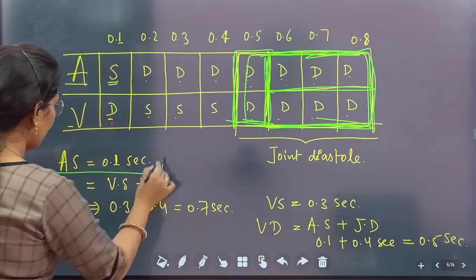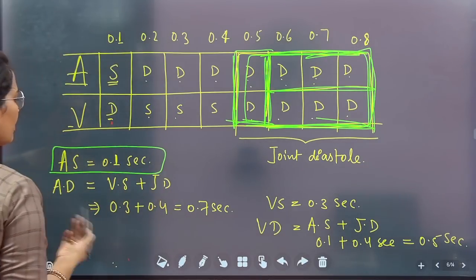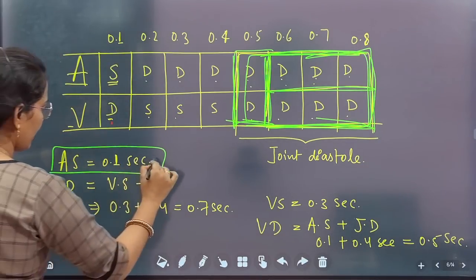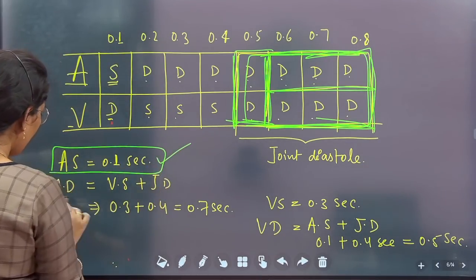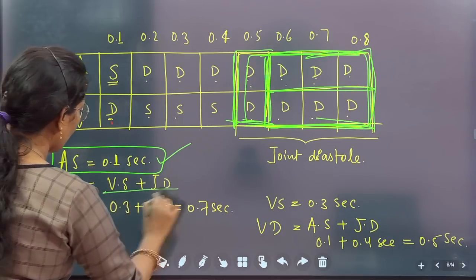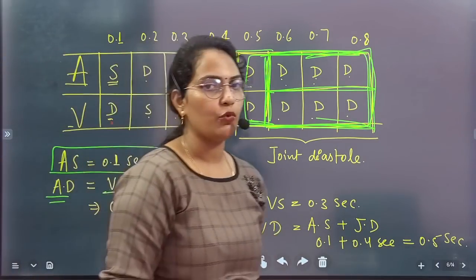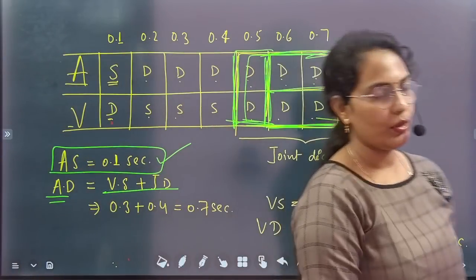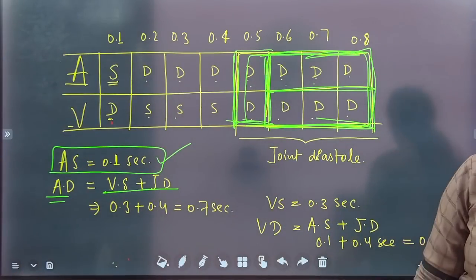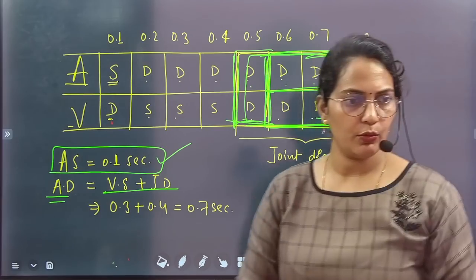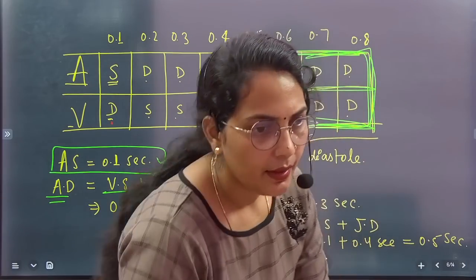This is how you can understand it. These durations — atrial systole 0.1s, atrial diastole 0.7s, ventricular systole 0.3s, ventricular diastole 0.5s, joint diastole 0.4s — you need to remember all of these. When we get time, we will study this in more detail.